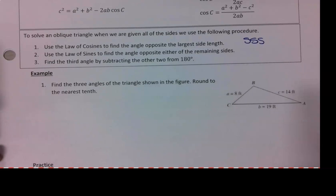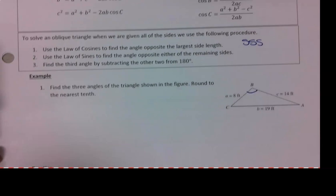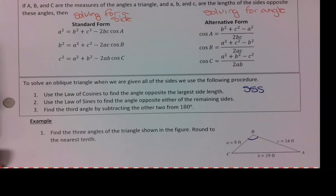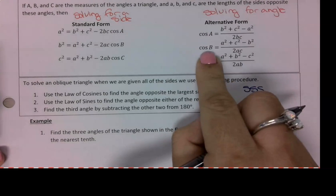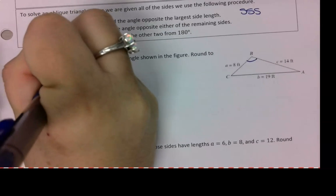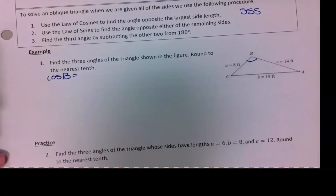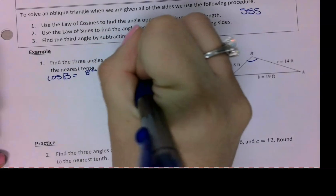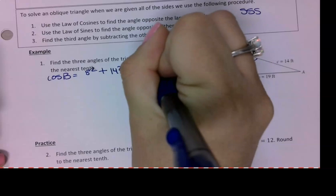So I am looking for an angle. Which formula should I use? Standard or alternative? Standard. Okay. And then I'm going to use the cosine B one. So then I am just plugging in my side lengths here. I have my A, which is 8, squared, plus my C value squared, which is 14, minus 2 times 8 times 14.